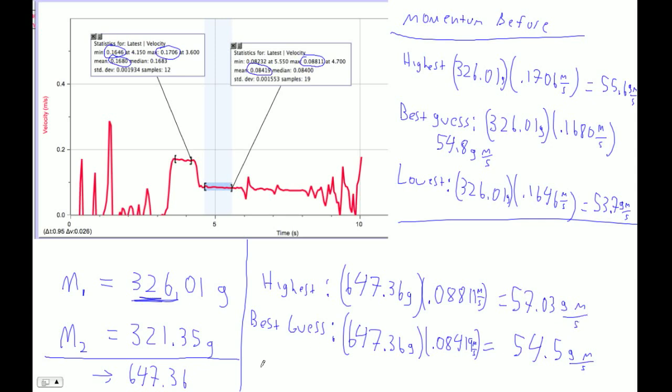And then our lowest, I already see that this overlaps. 647.36, OK? And then the lowest is .08232. So alpha A times .08232. And this is 53.3. 53.3. And this is gram meters per second.